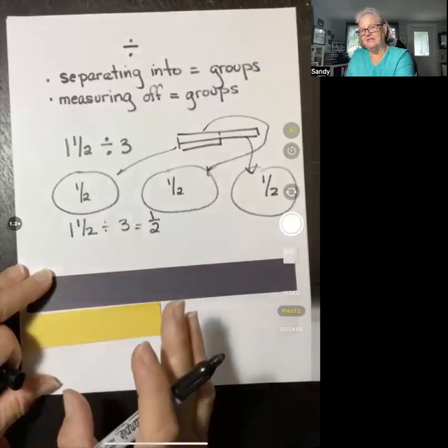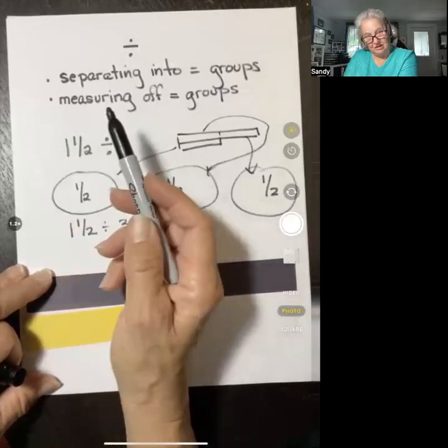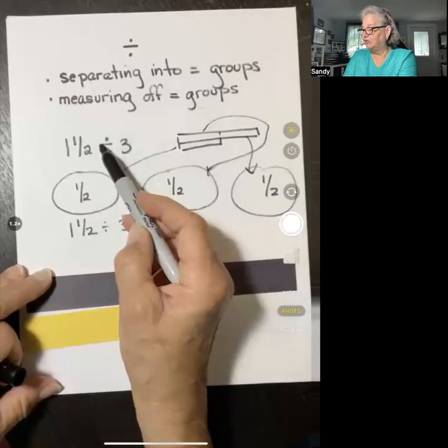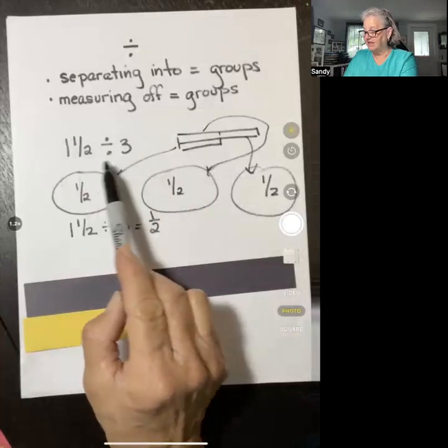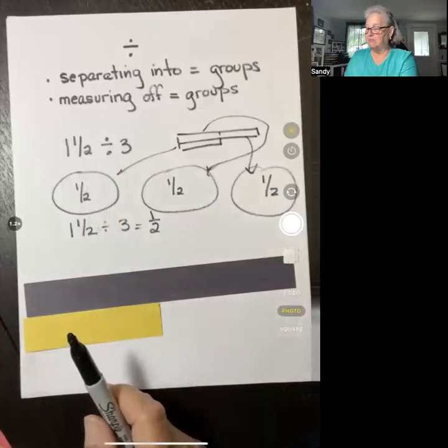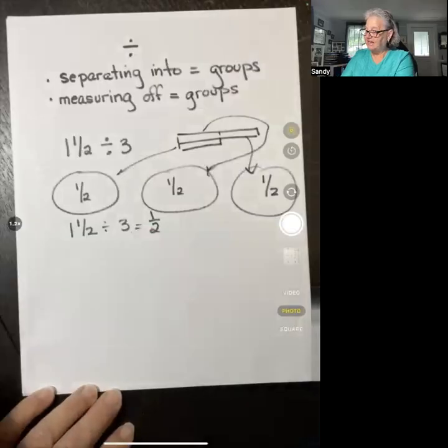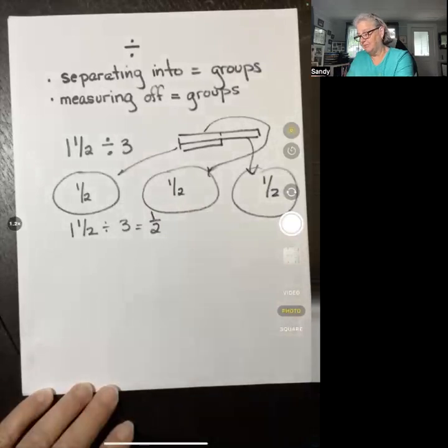So in each group, I'm going to end up putting a one half size piece. So one and a half separated into three equal groups is going to equal one half. Now, notice this is different from when I learned division. We would change this into an improper fraction and then we rewrite it as a multiplication problem. In this technique, we want to use our understanding of division and what it means and extend it to fractions.